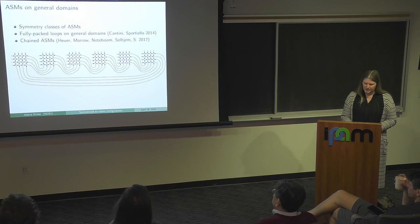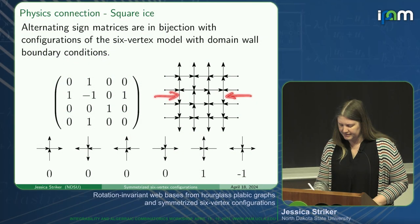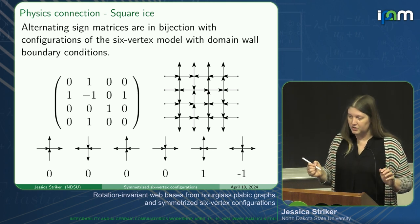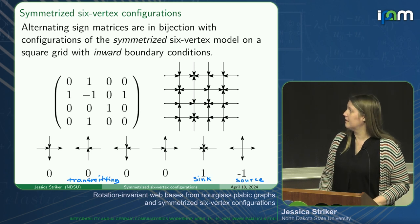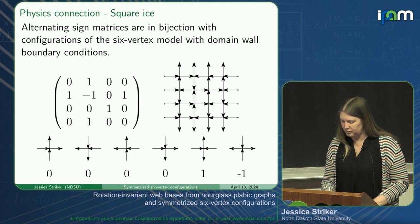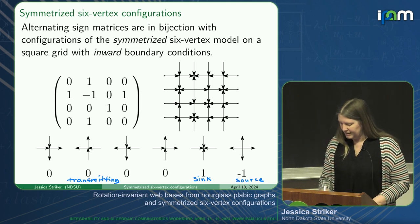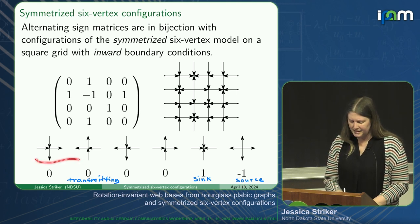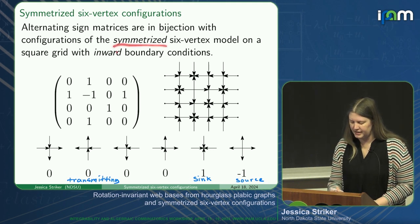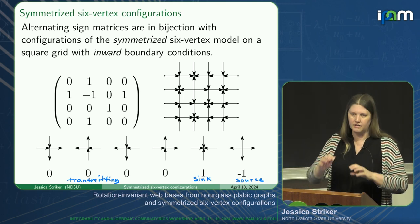These domain wall boundary conditions on the six-vertex model are very particular—they're the things that give you alternating sign matrices. Typically we have arrows pointing in on the sides and up and down on the top and bottom. What we're going to do for this work is make it so that it doesn't matter which way is the top: we're going to turn around all the vertical arrows so that now all of the arrows in your boundary conditions are pointing inward. When we flip the arrows around, the vertex corresponding to one becomes a sink, and the minus one turns into a source. Everything else—the transmitting vertices—just gets permuted.